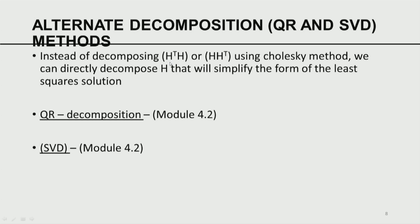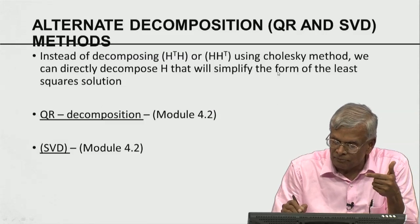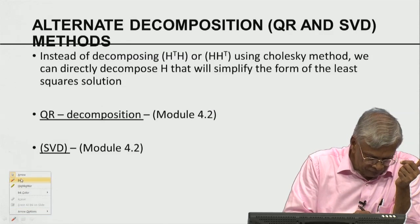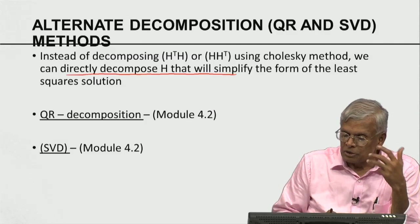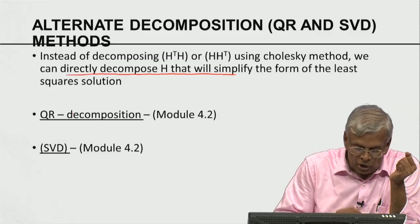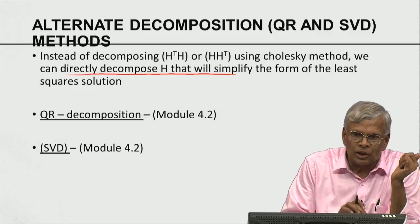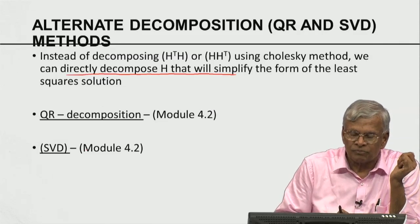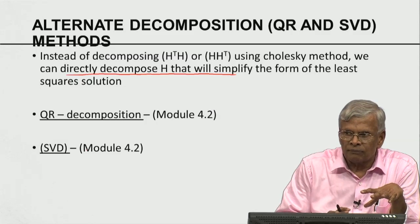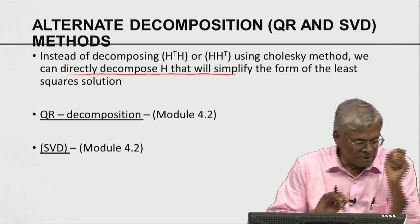An alternate way, instead of first composing H^T H and then decomposing using Cholesky, is to directly decompose H itself to simplify the form of the least square solution. These two methods are called QR decomposition and SVD (Singular Value Decomposition). QR decomposition, Cholesky decomposition — these are the three popular matrix methods for solving the resulting system Ax = b where A is symmetric positive definite.